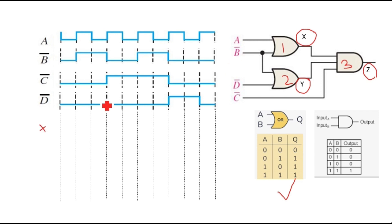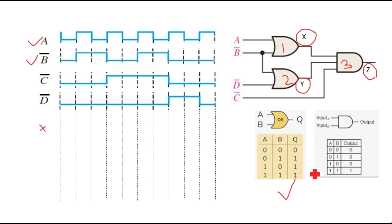For x, the first OR gate, I consider only inputs a and b̄. From the OR gate truth table: 0+0=0, 0+1=1, 1+0=1, 1+1=1. The conclusion is: if any one of the inputs is 1, the output is 1. Only when both inputs are 0 do you get a 0 output.